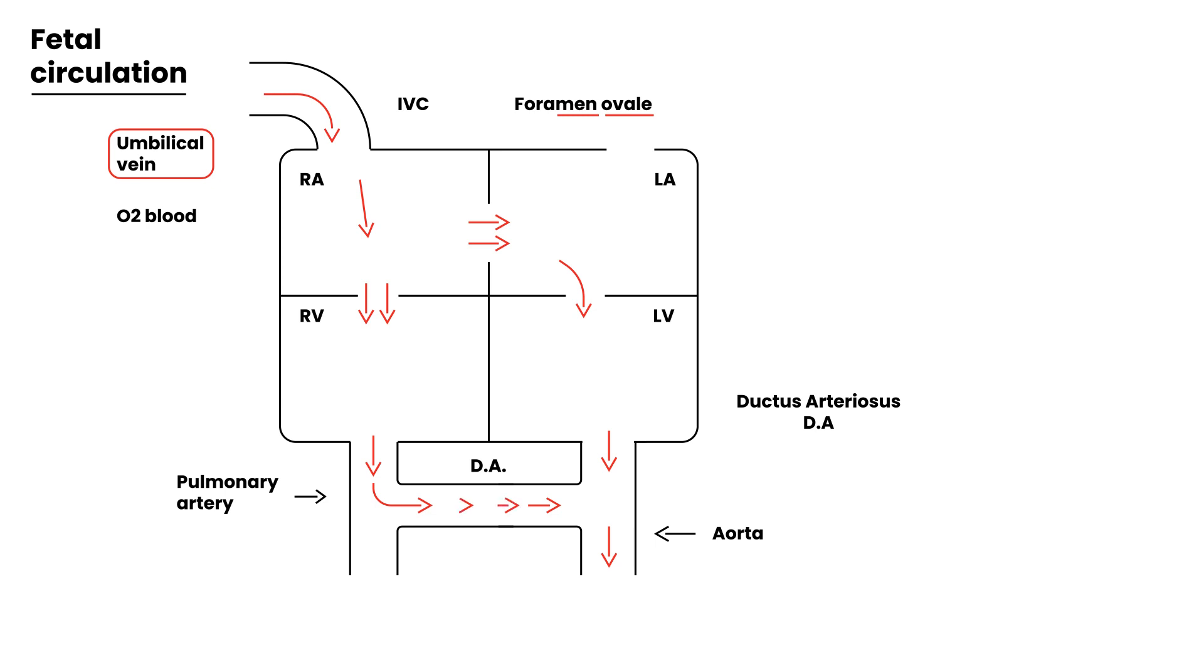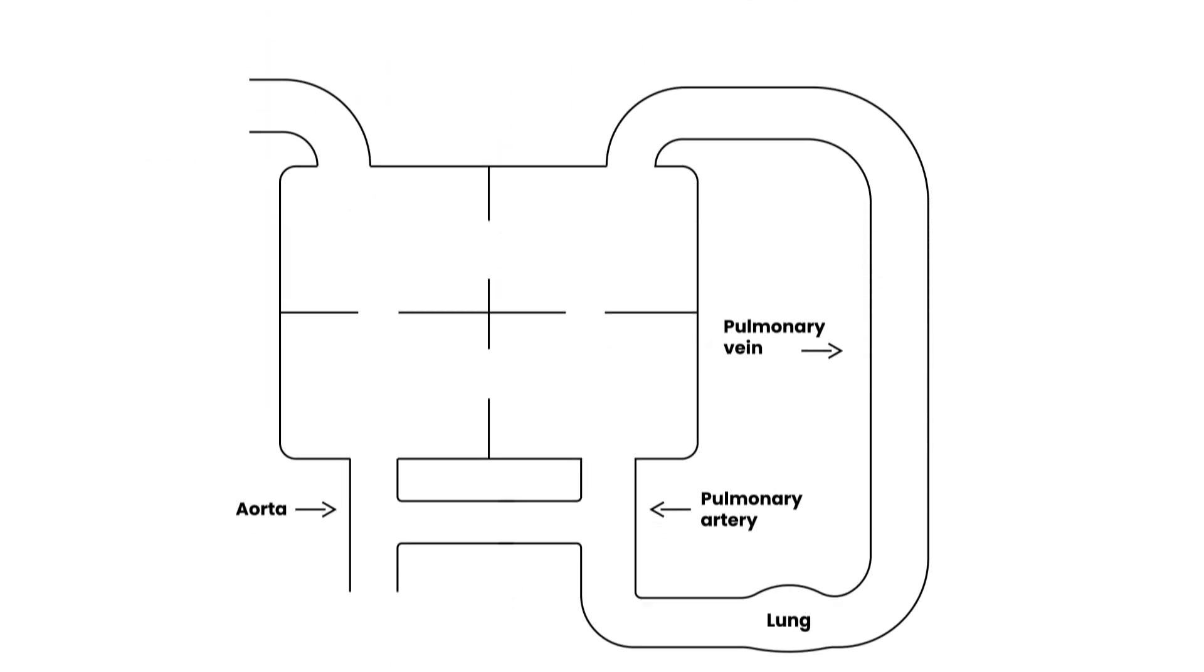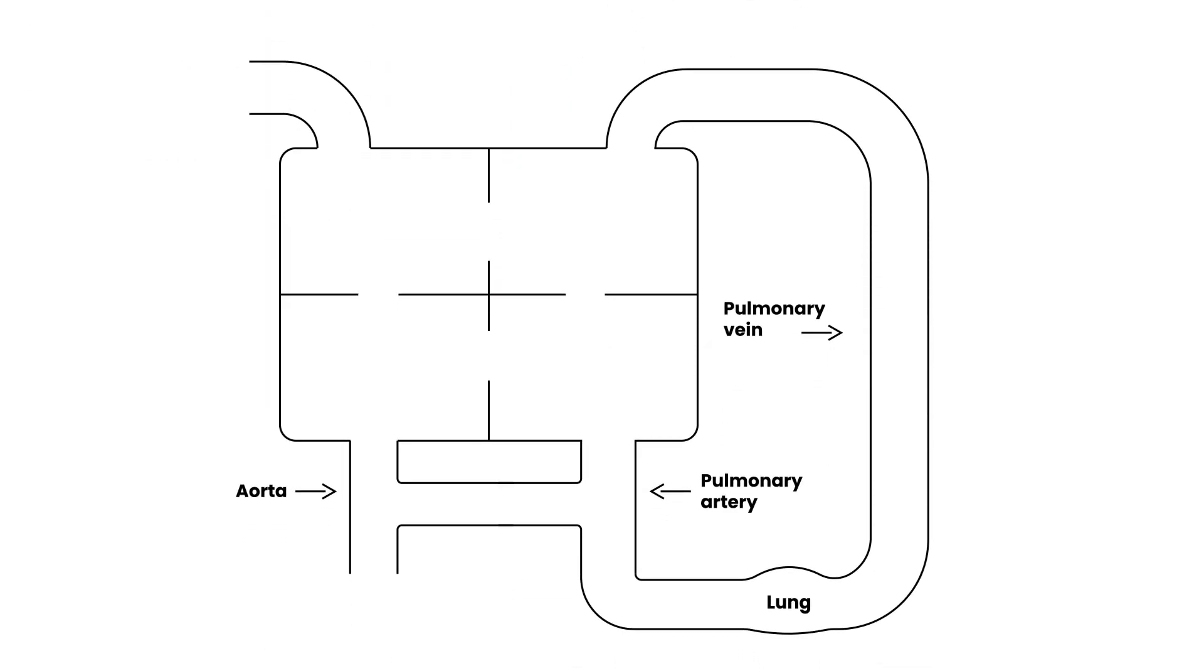In TGA, what happens is something that pretty much seems like a disaster, which is these great vessels are transposed. So instead of this being the pulmonary artery, this actually is now the aorta. And instead of this being the aorta, this is now the pulmonary artery. As you can see, that's a complete disaster. So that's what happens in transposition of great vessels.